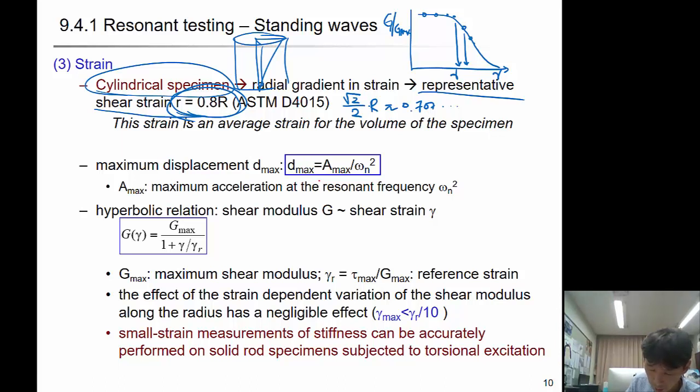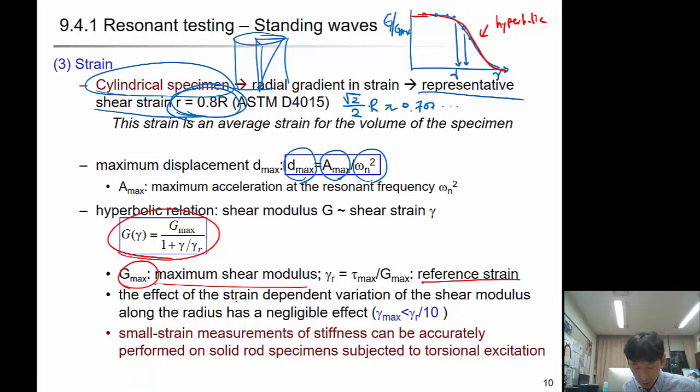To get the strain, you need to know the displacement, and displacement can be obtained from acceleration and resonant frequency. In hyperbolic relation, this modulus degradation curve shape can be drawn or fitted using this hyperbolic relation. G_max is the maximum shear modulus, and gamma_R is the reference strain. The effect of strain-dependent variation of shear modulus along the radius has negligible effect. Small-strain measurements of stiffness can be accurately performed on solid rod specimens subjected to torsional excitation.